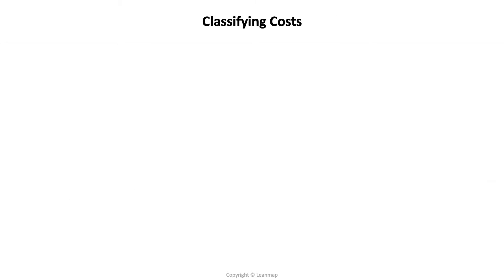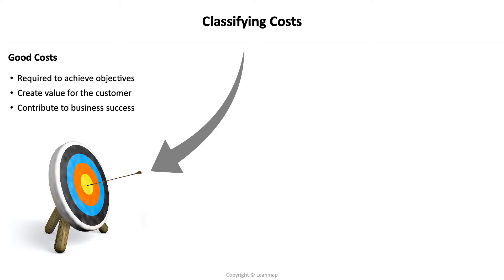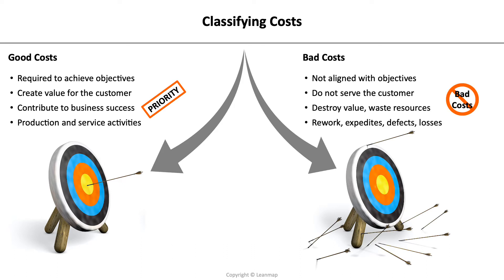As a first step, we are classifying costs into good and bad. Good costs are required to achieve objectives — they create value for the customer and contribute to business success, such as production and service activities. That's a priority. Bad costs are not aligned with objectives. They do not serve the customer; they destroy value and waste resources, such as rework, expedites, defects, losses and so on. Those are bad costs.